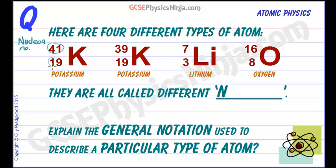And the smaller number is the proton number, also called the atomic number, and that tells us how many protons there are in the nucleus of each of these atoms.